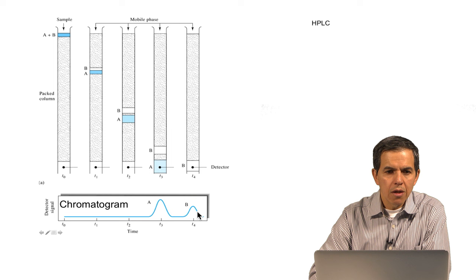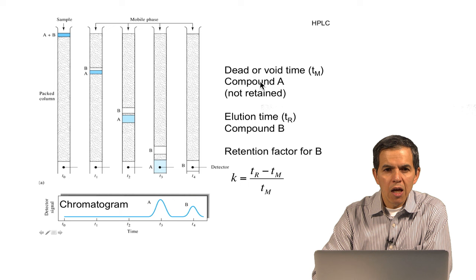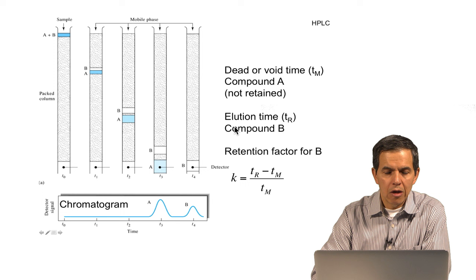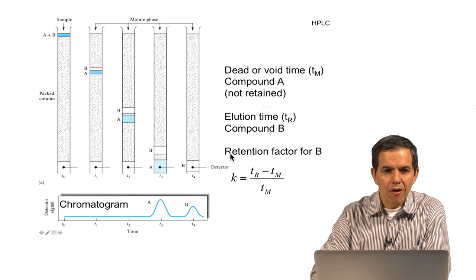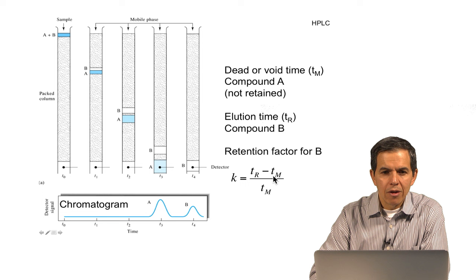The nomenclature to refer to these peaks is bands, peaks, or zones. Important nomenclatures in describing these separation principles are the dead volume or void time corresponding to a compound such as A that is not retained at all, elution time TR corresponding in this example to compound B that is retained by the stationary phase due to partitioning, and the concept of retention factor, which is defined for those compounds that are retained and can be calculated based on the retention time and the dead time divided by the dead time of the marker.